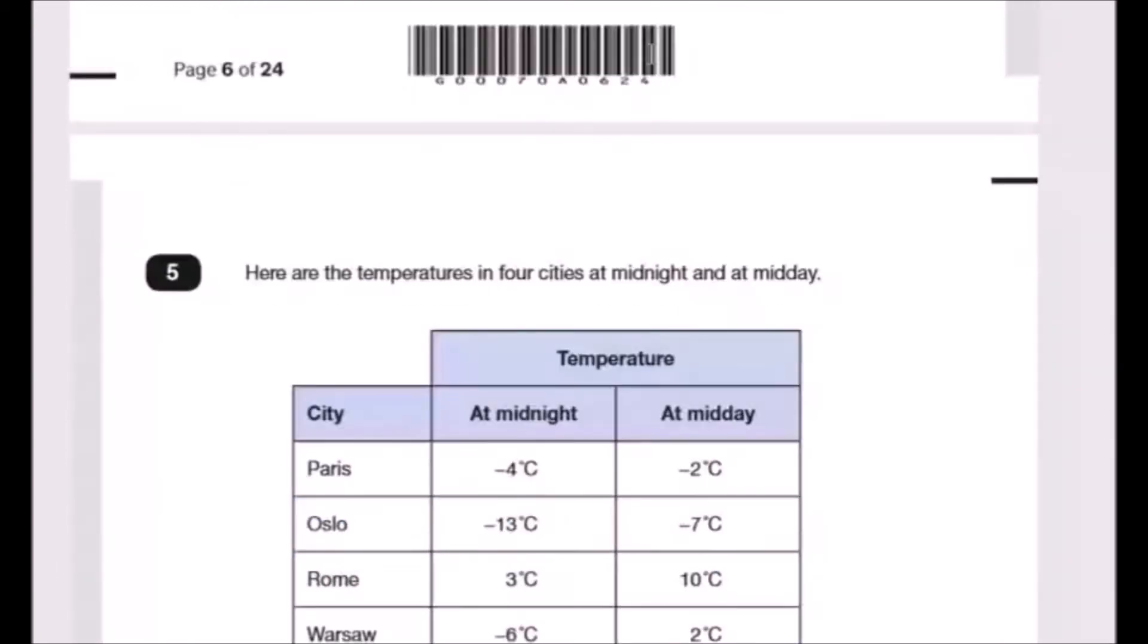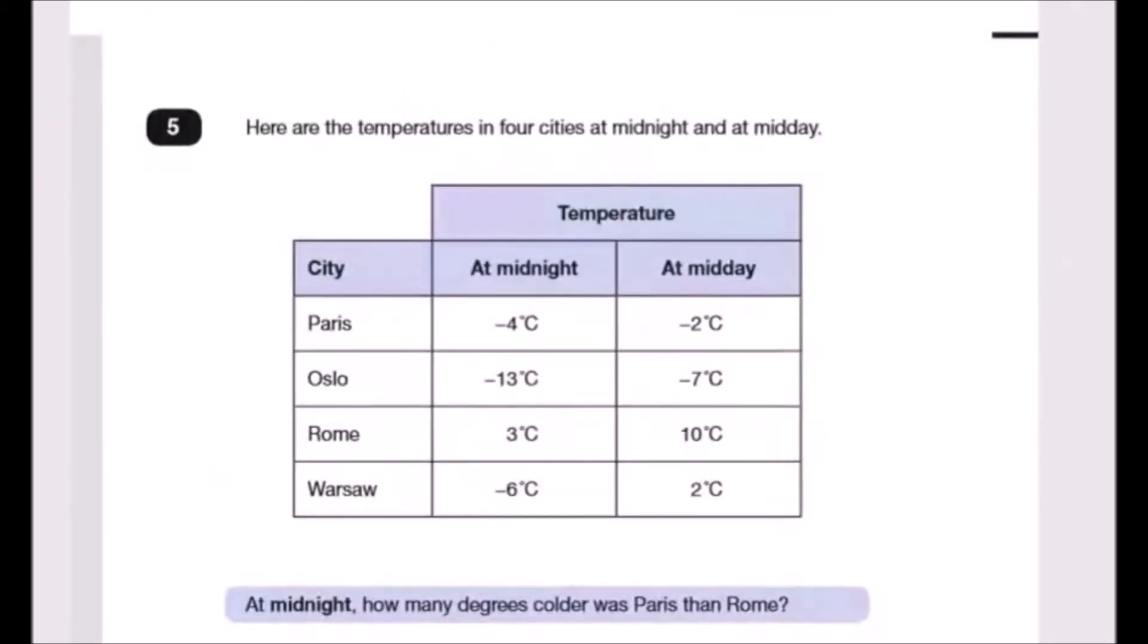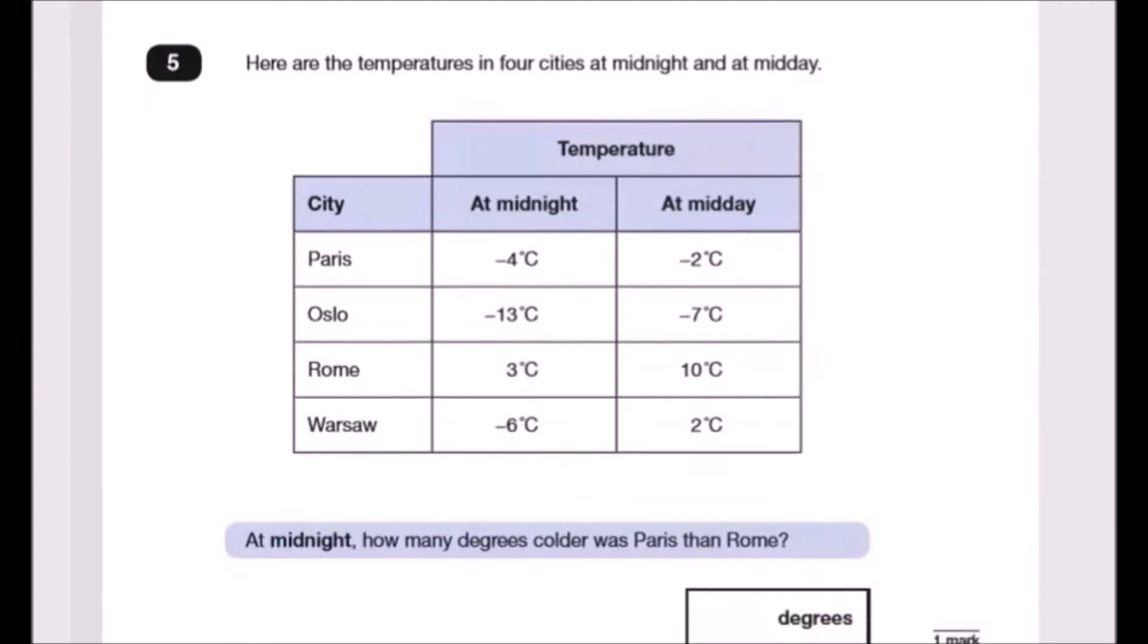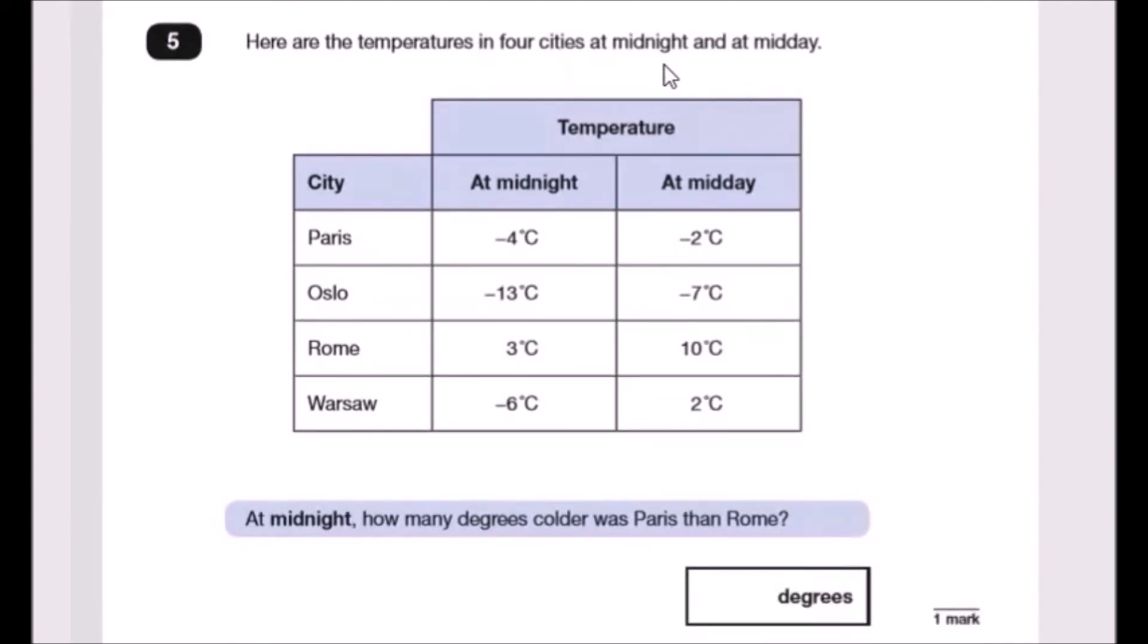Okay, number five. Let's check this out. So here are the temperatures in four cities at midnight and at midday. Okay, so for example at Paris at midnight the temperature was minus four degrees, which is pretty cold, but at midday, 12 hours later, it was minus two, so it went up by two degrees. But if you're in a city like Oslo, it's really cold and it's not that much different - it's warmer but not much difference. But Rome is of course a lot warmer.